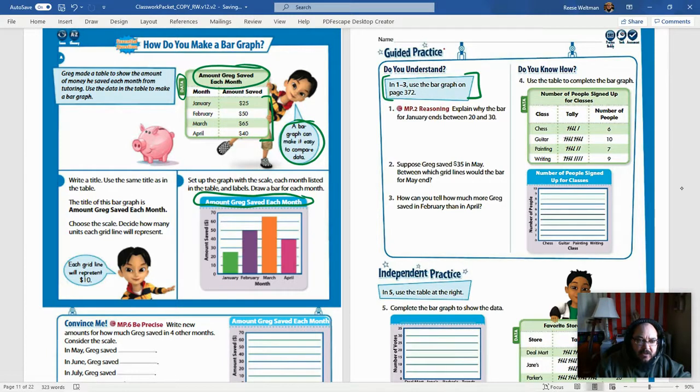A bar graph can make it easy to compare data. Remember, comparing data means looking at the differences between different data. Okay, so now it says write a title. Use the same title as in the table, that would be right up here: amount Greg saved each month. That's the same thing it said up here on our data table. The title of this bar graph is amount Greg saved each month. Choose the scale. Remember, the scale is over here on the side, and decide how many units each grid line will represent. Well, in this case we are counting by tens with 0, 10, 20, 30, 40, 50, 60, 70, so each one of our lines represents 10.